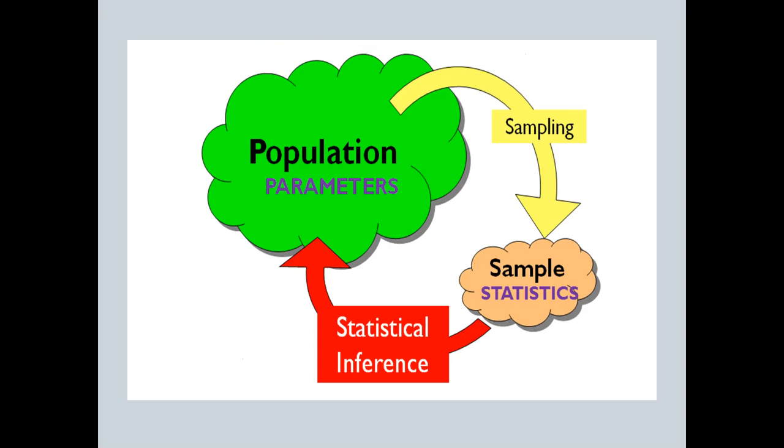Here's that picture again from chapter 1, but now it's updated to include parameters and statistics, since that's really what we're dealing with. You compute the statistic in the sample and try to use that to estimate the population parameter.